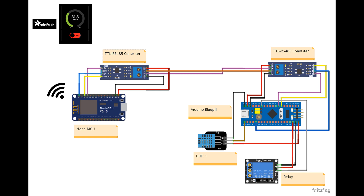Let's see the schematic or connection diagram for this experiment. We have taken NodeMCU and STM32 Arduino blue pill as our microcontrollers. On the Arduino blue pill we have connected the DHT11 and the relay. To establish Modbus communication we have used RS-485 to TTL converters on both microcontrollers, and the NodeMCU is connected to the Adafruit MQTT server over Wi-Fi. Connection diagrams will be provided in the description.